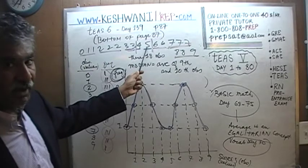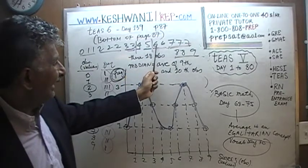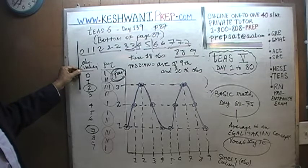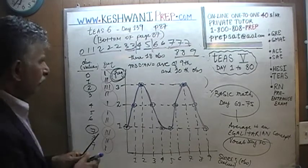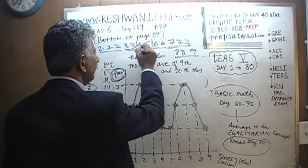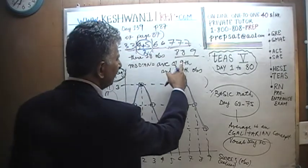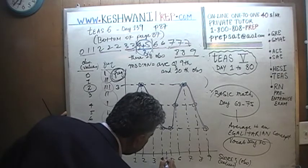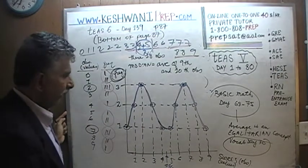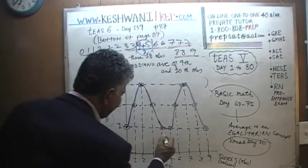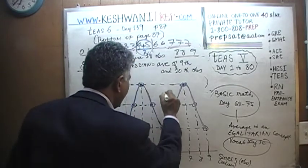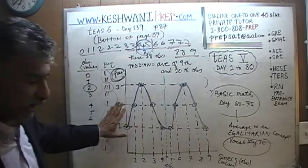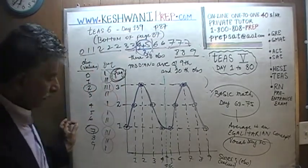And the 10th observation is 5. These two are sitting in the middle — 8 observations are to the left of 4, and 8 observations are to the right of 5. So the median is the average of these two numbers: 4 plus 5 divided by 2. The median is 4 and a half. You can clearly see half the observations lie below 4.5 and half lie above 4.5.